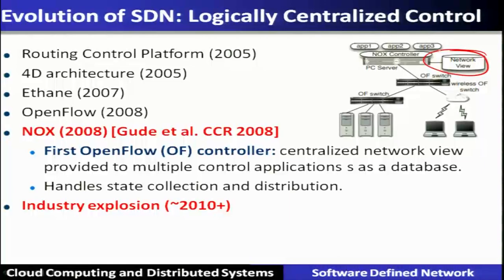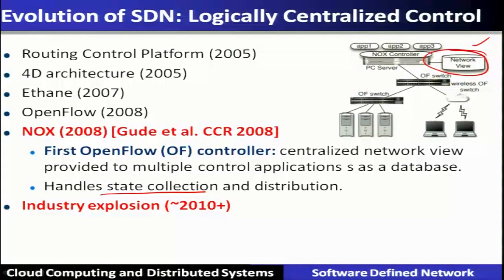The central controller has a complete view of the network — it can be programmed like a database, collecting the state of the entire network, storing it, doing analysis, and providing control back to those devices. After that, almost every networking industry has adopted software defined networking in one form or another.